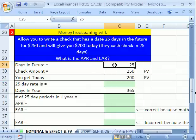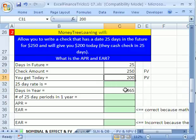Here it is in the cells, 25 days, that's the length of the loan. The check amount that will be cashed in the future, that's the future value, is $250. The loan we get today is $200. That'll be present value.